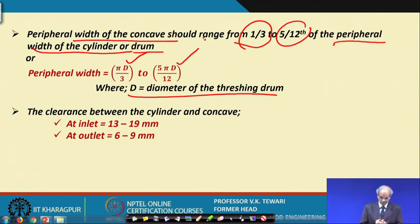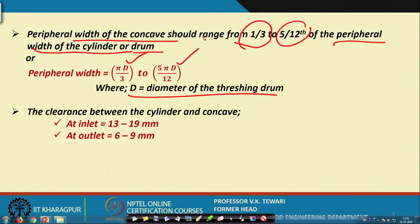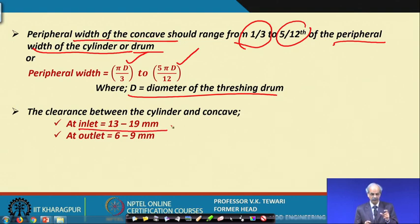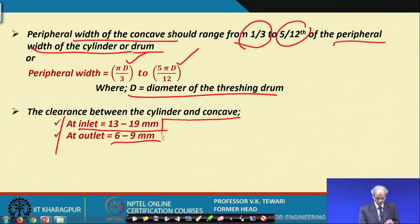The clearance between the cylinder and the concave is very important. When the material — grain and straw — enters, it has to be bitten, then compressed, so rubbing action takes place and the grains are removed. The inlet clearance varies between 13 to 19 mm and the outlet is smaller, so that with the beating action threshing is proper. You can choose any value in this range.